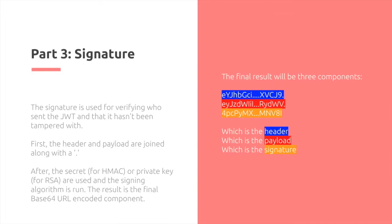The last part is the signature. This is where we incorporate the component that ensures the data hasn't been tampered with and is from the original author. We generate the signature by concatenating the header and the payload, then applying our secret for the HMAC algorithm or private key for RSA to actually sign it. This is what creates the final JWT token.